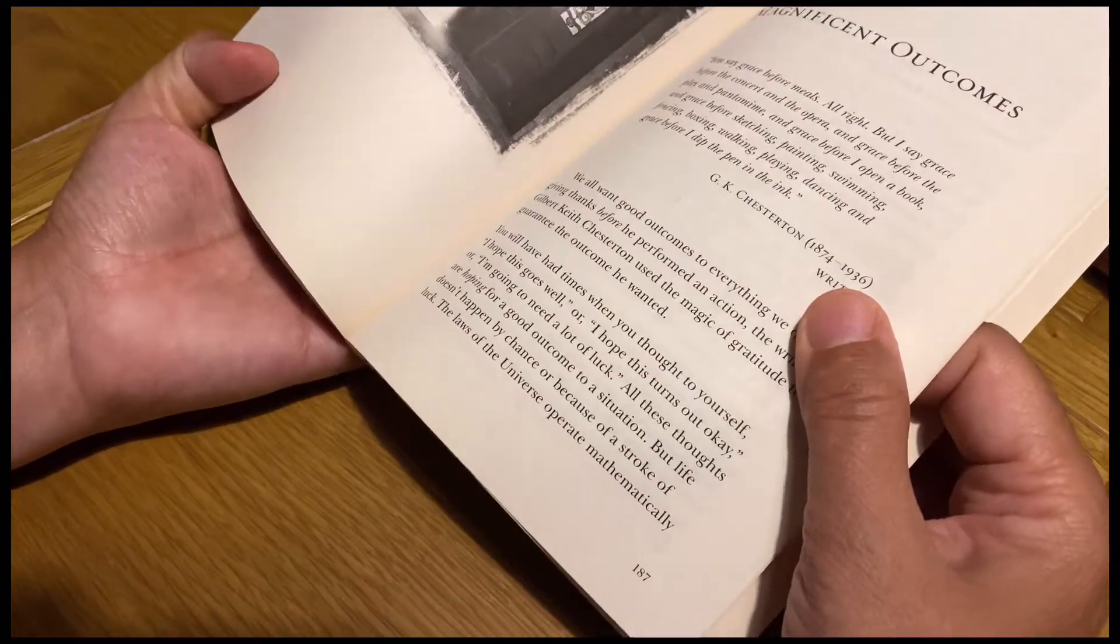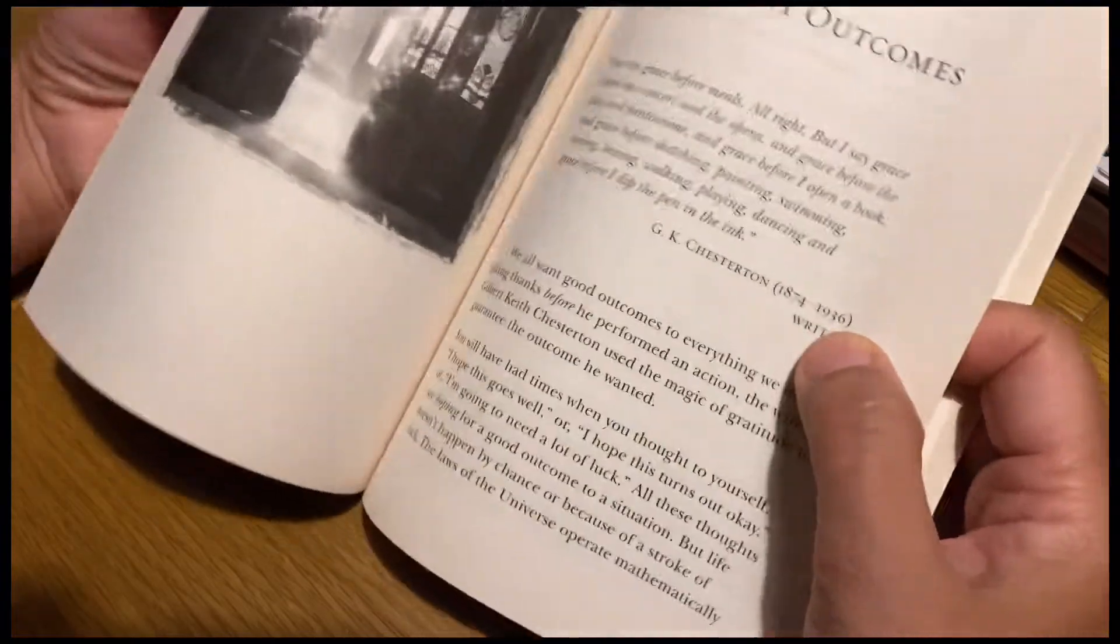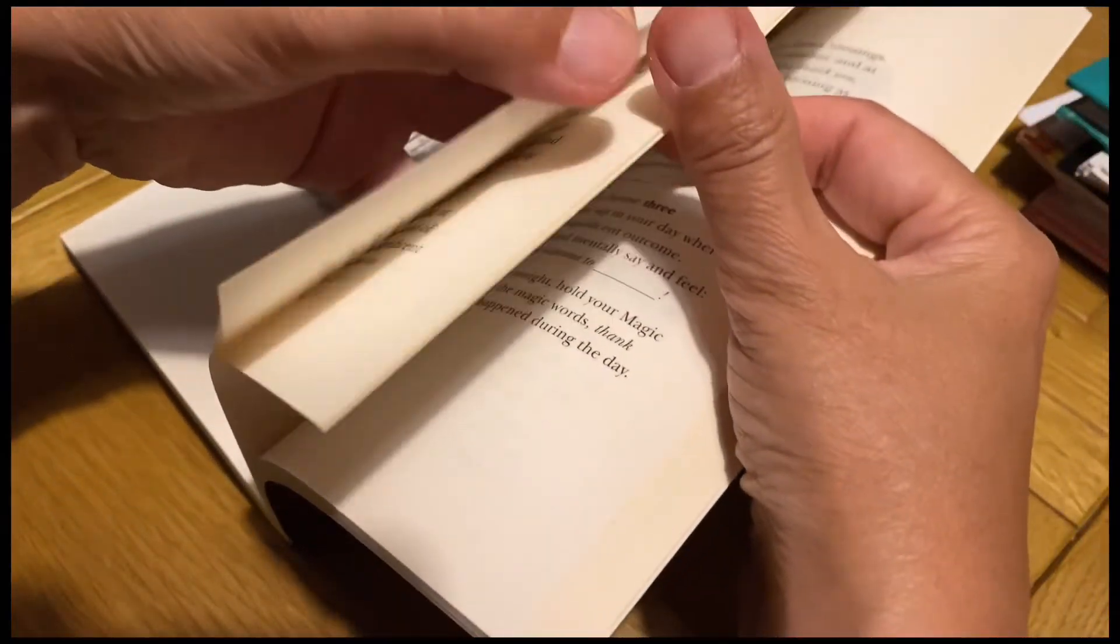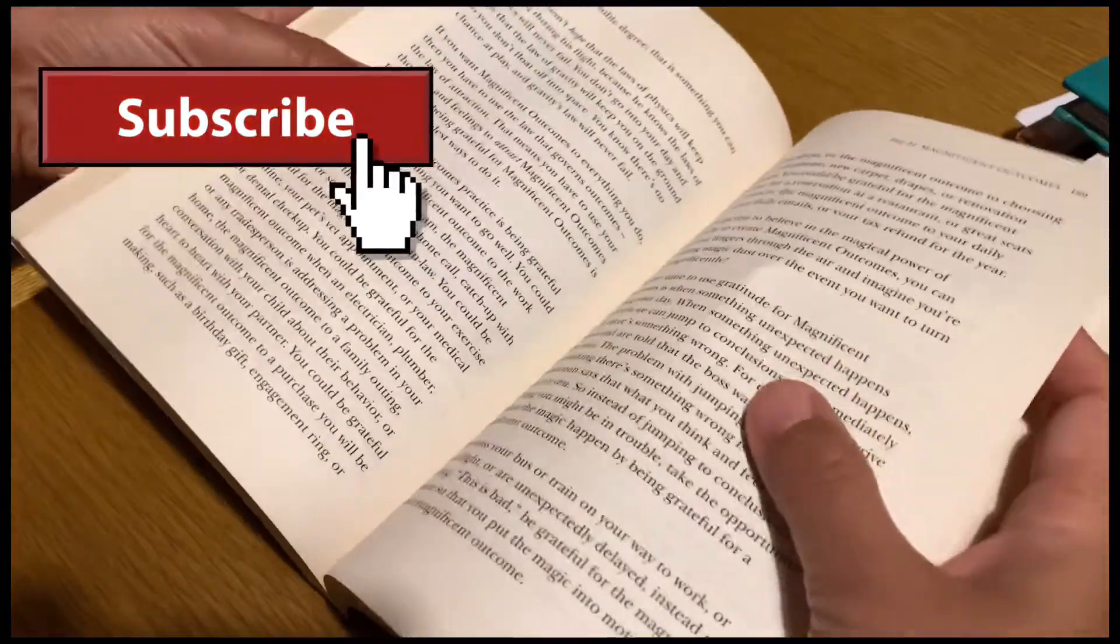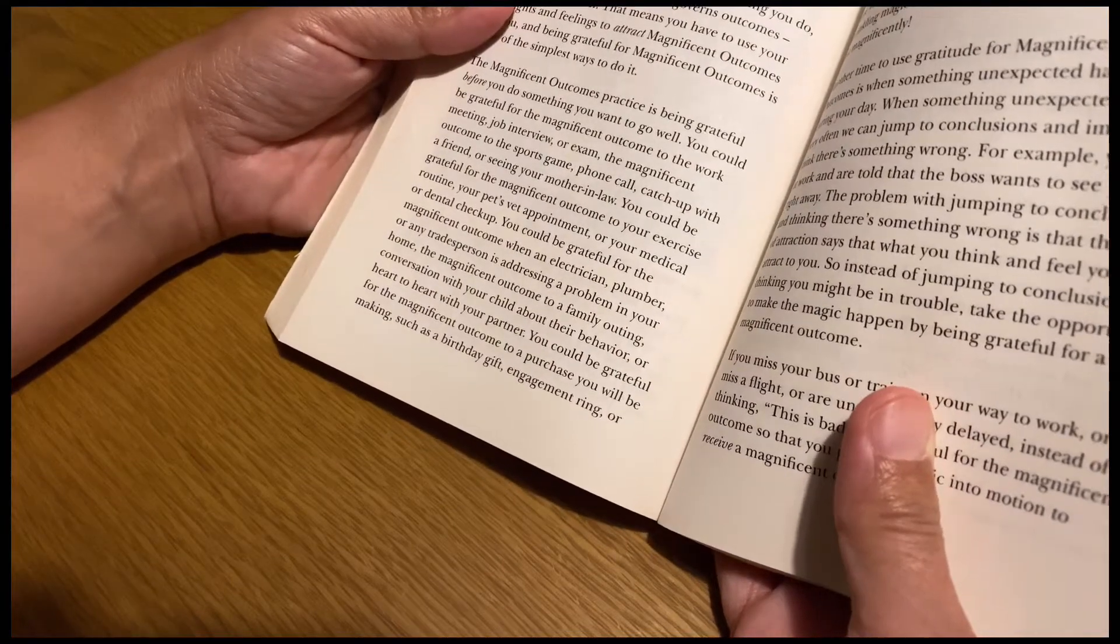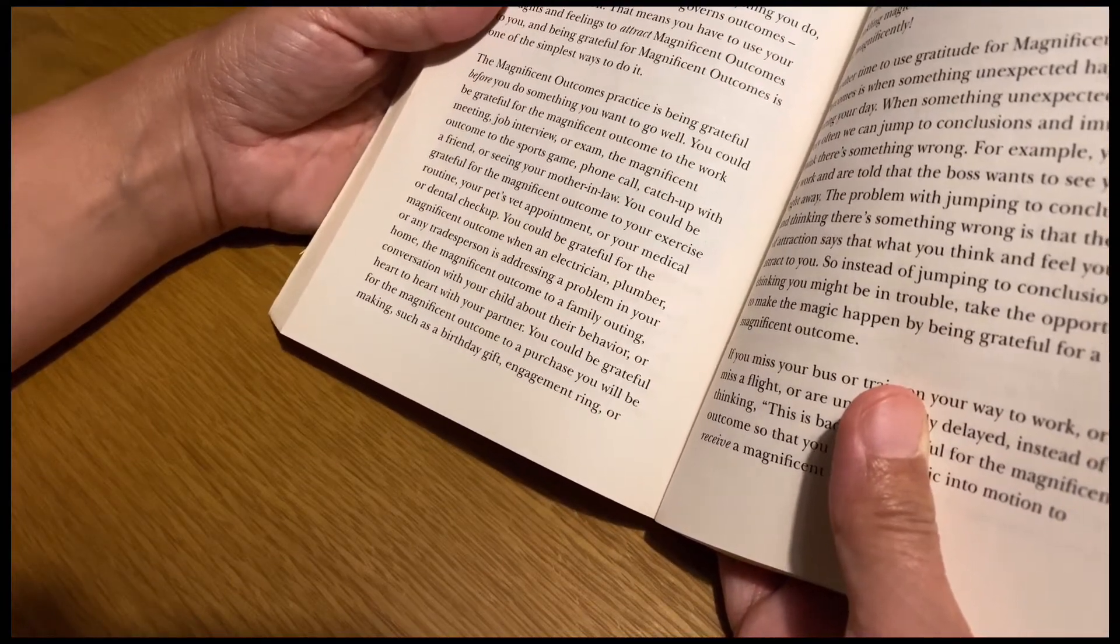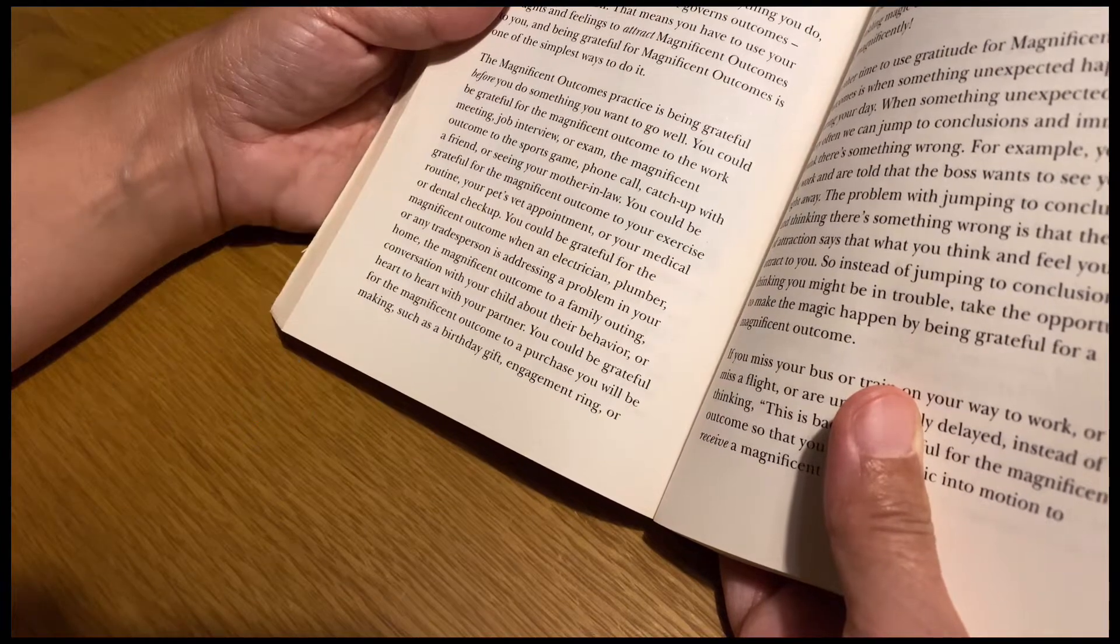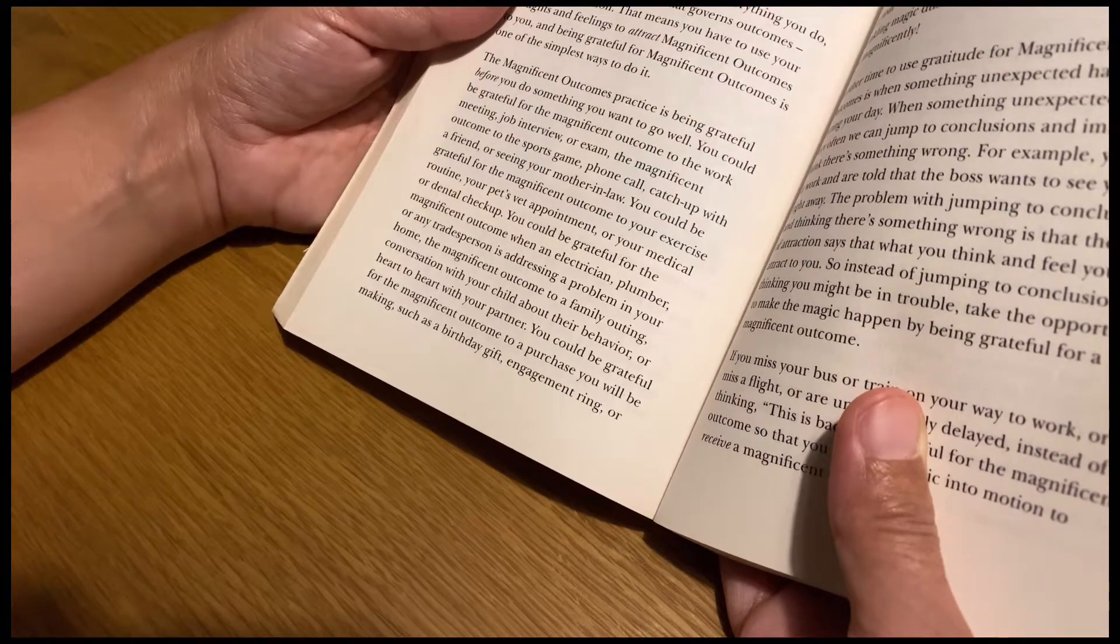Magnificent outcomes, this chapter name is magnificent outcome. So what this chapter is about in today's practice, basically magnificent outcome practice is being grateful before you do something you want to go well.